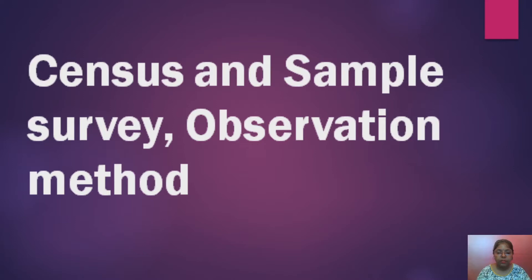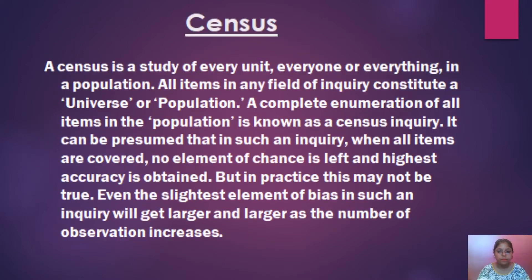In the previous presentation, we have talked about sampling and its types. Here we will discuss the census and sample survey and the observation method. Census refers to the quantitative research method in which all the members of the population are enumerated — that means each and every unit of that population is specified.